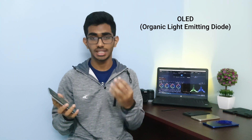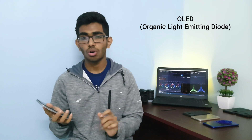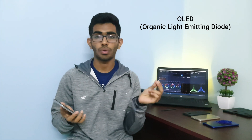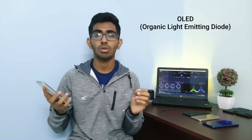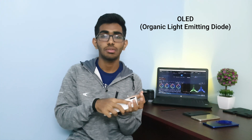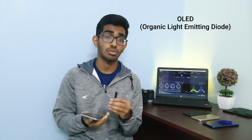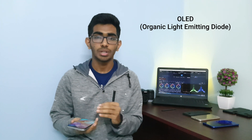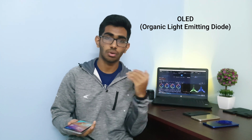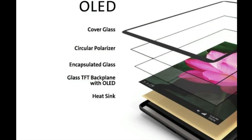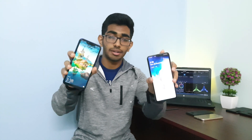OLEDs work in a completely different way. OLEDs have an LED comprised of an organic layer which emits light when current is flowed through it. OLED displays have really fewer layers, which makes them flexible, lightweight, and they also consume less power compared to LCDs.